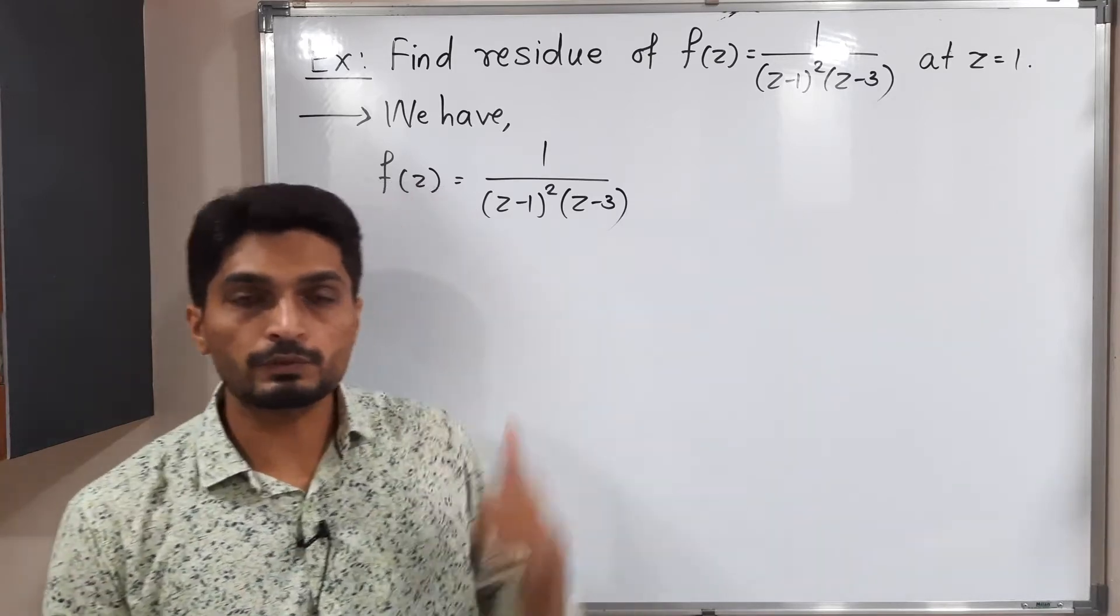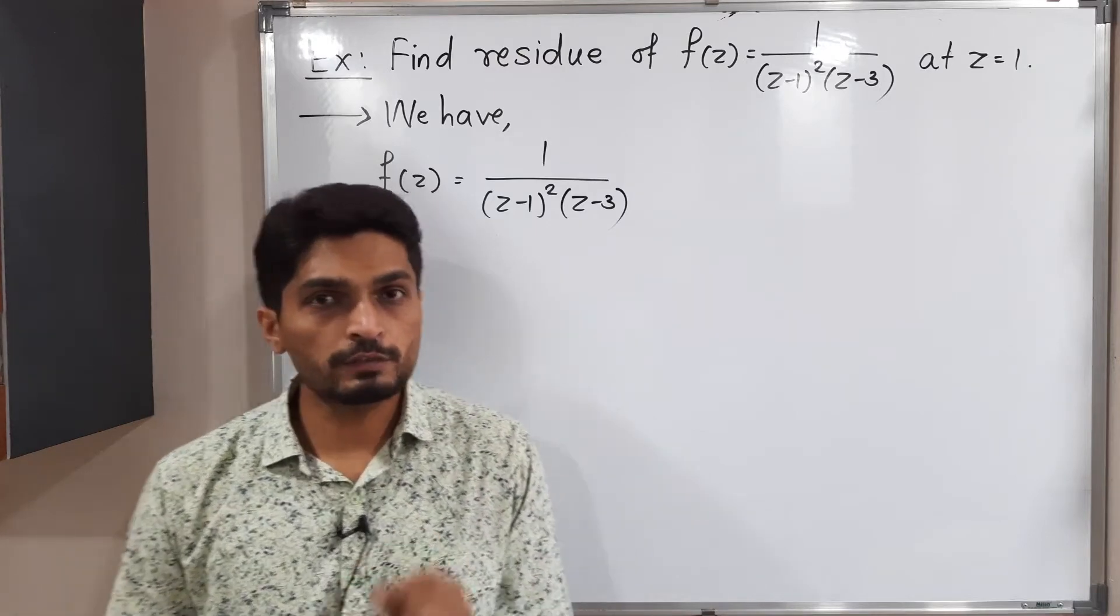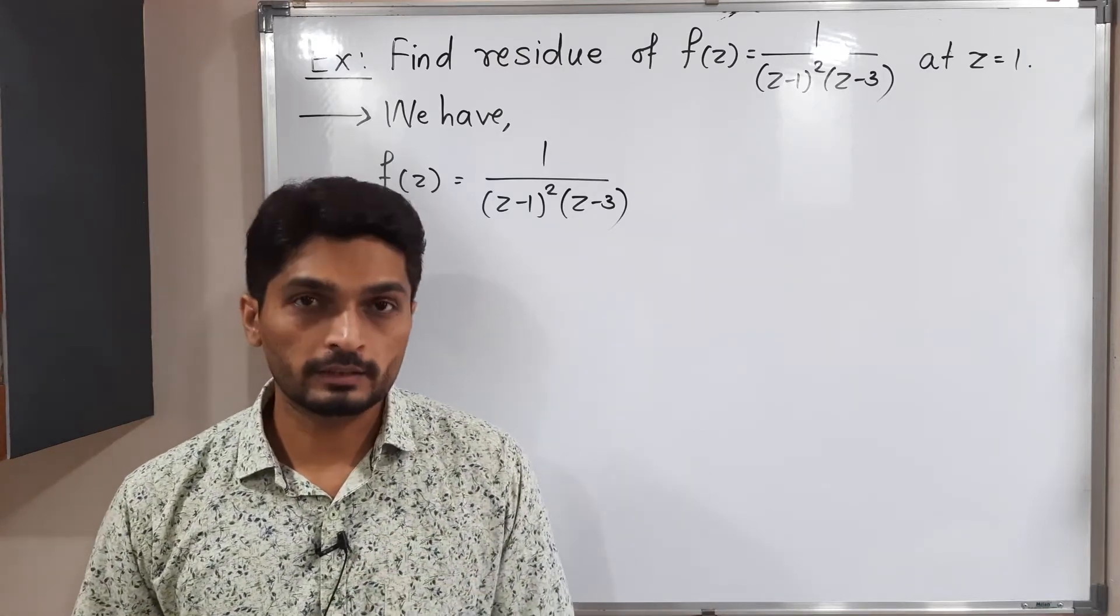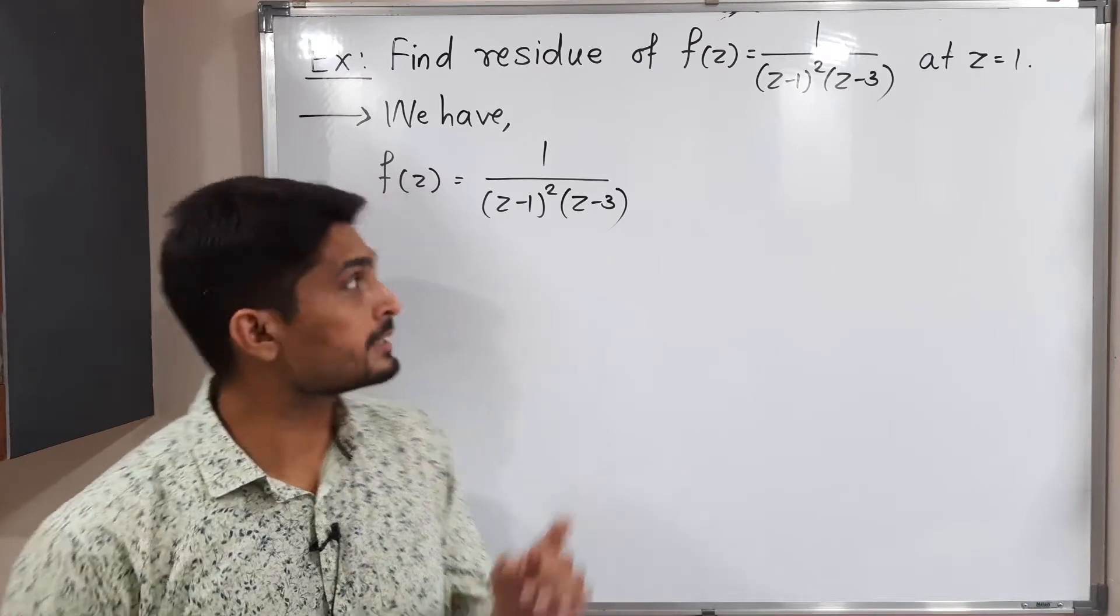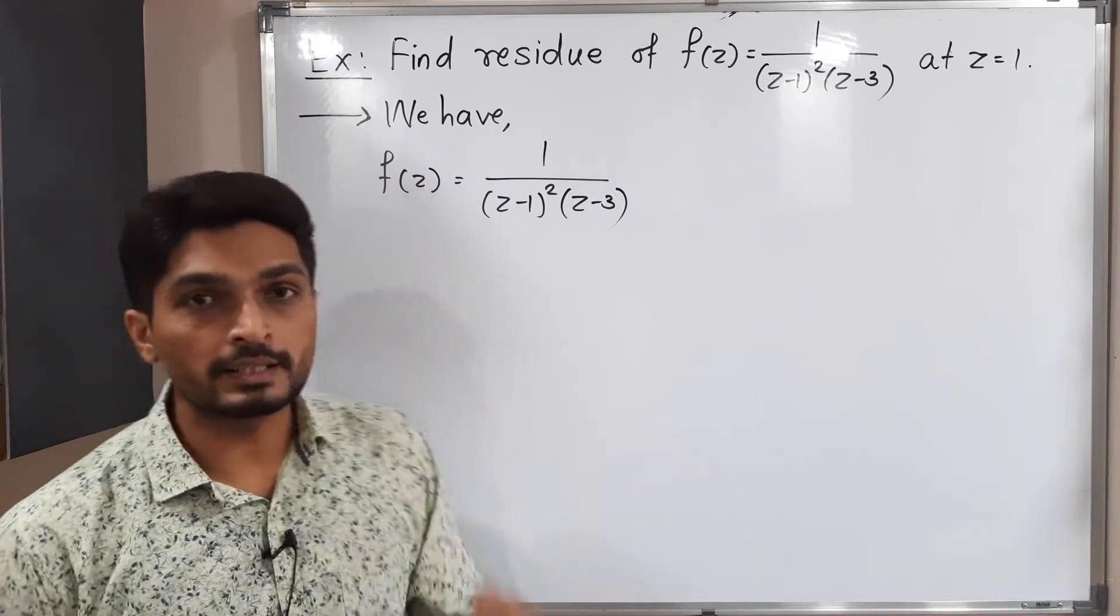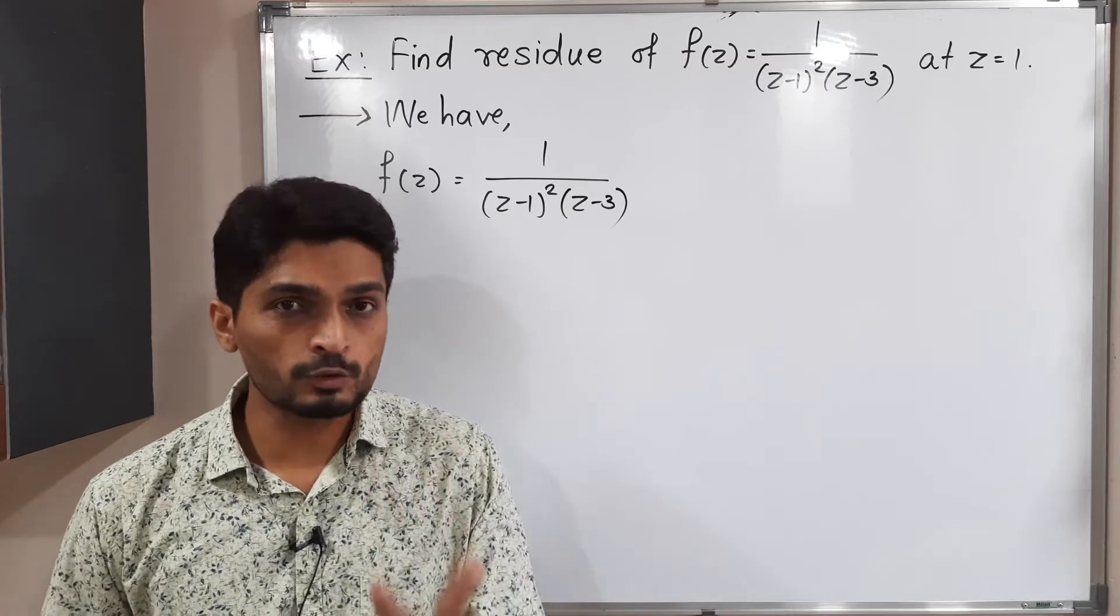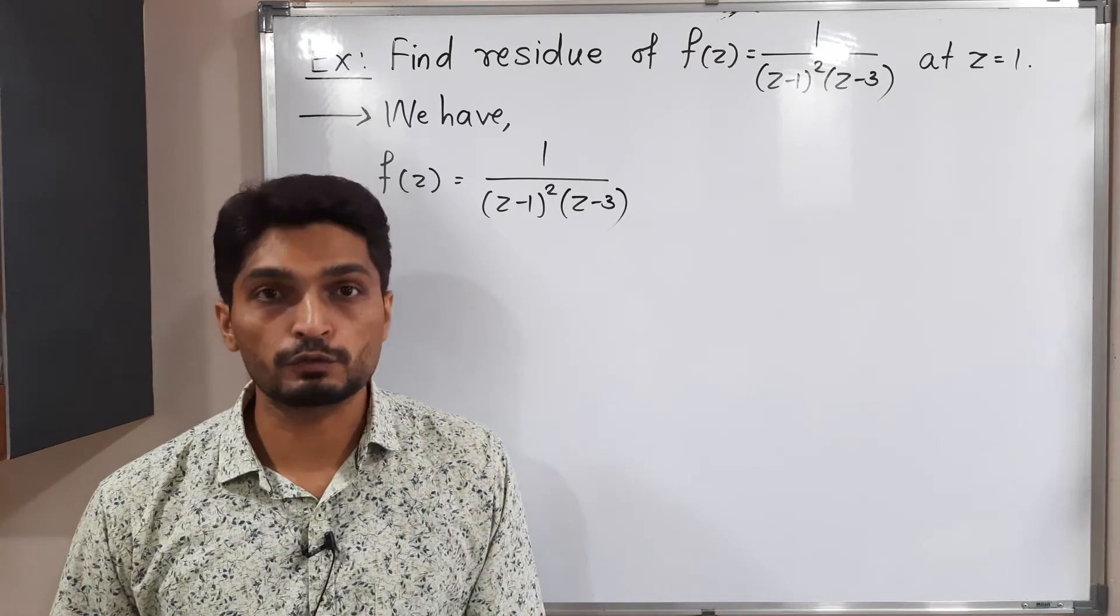Let us write the given function first, which we have already done. This function is not analytic, or you can say the singular points of this function are z equals 3 and z equals 1. Since at these two points, the denominator of the function will be 0.